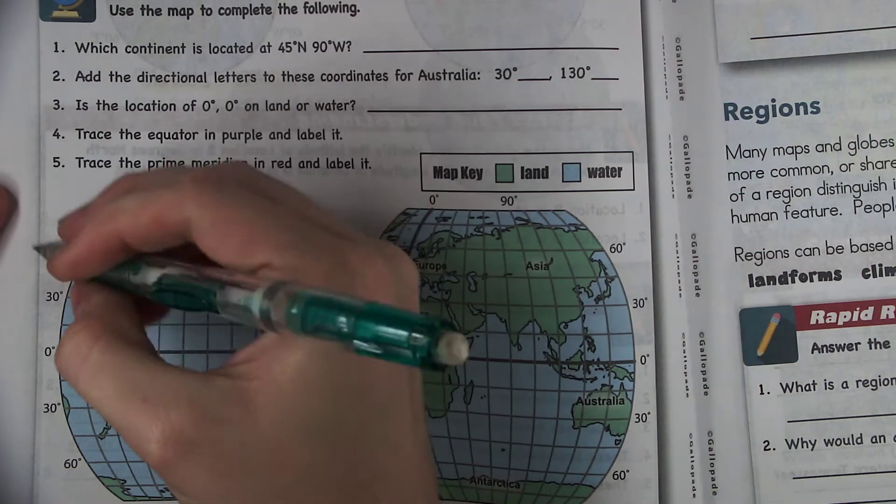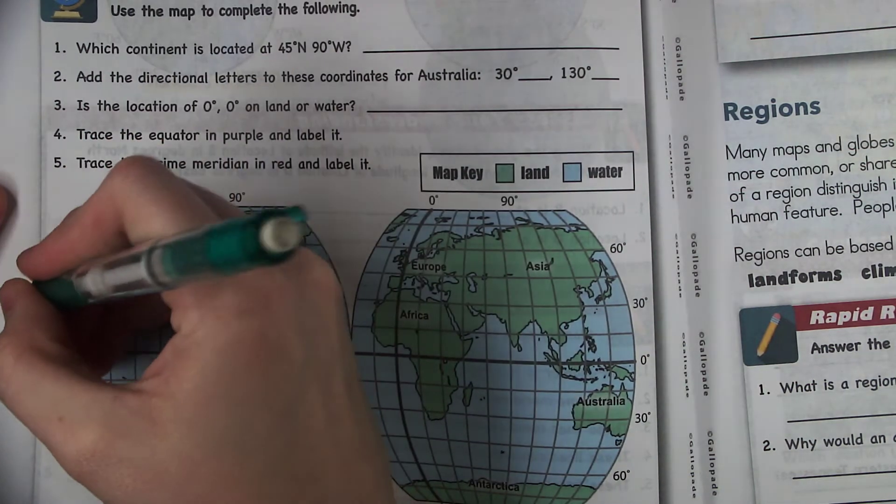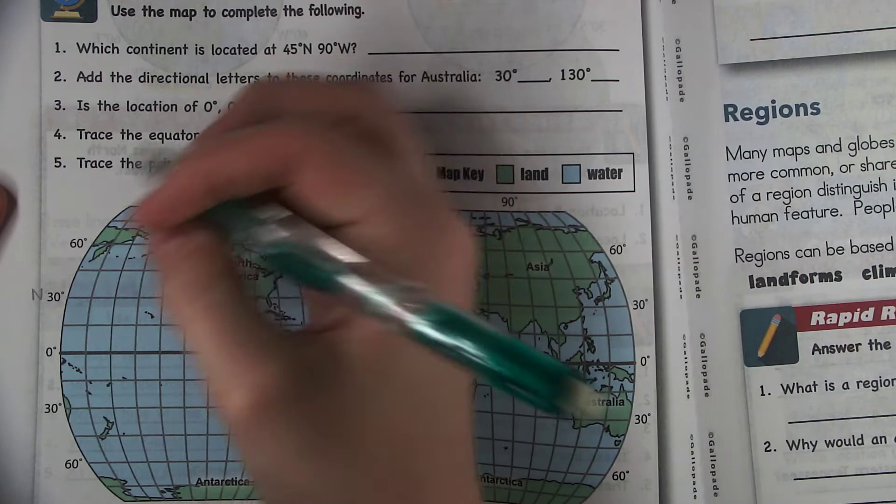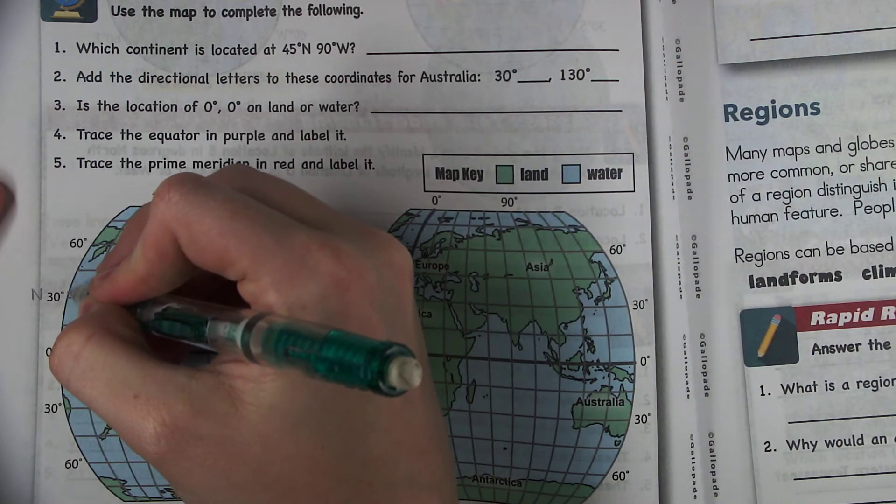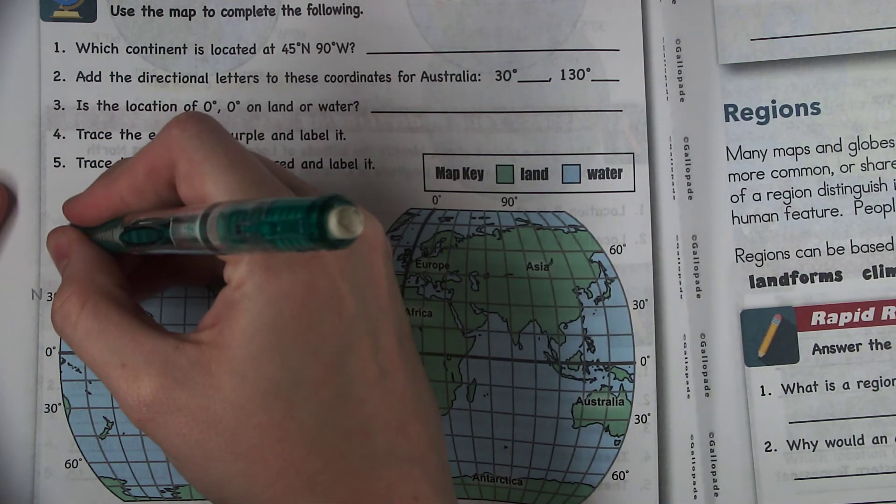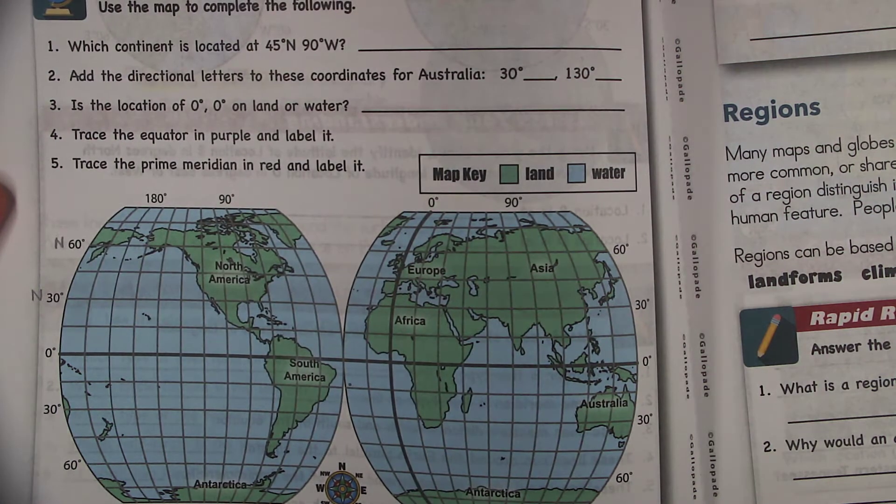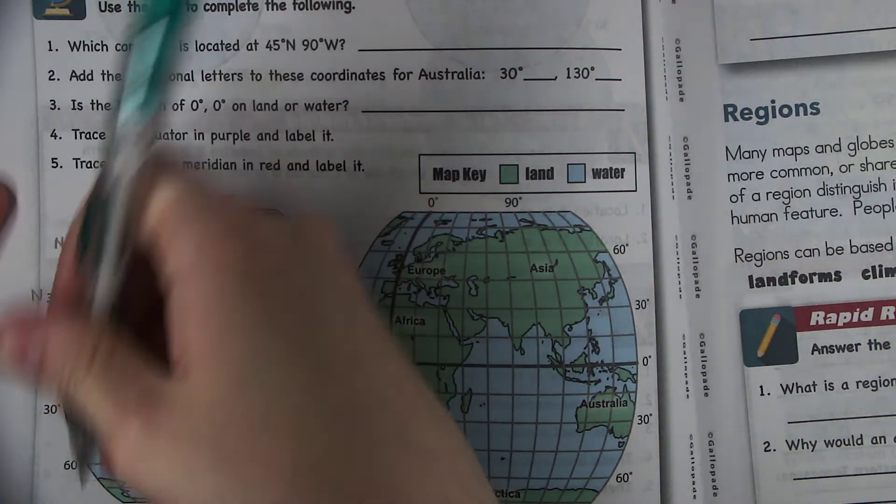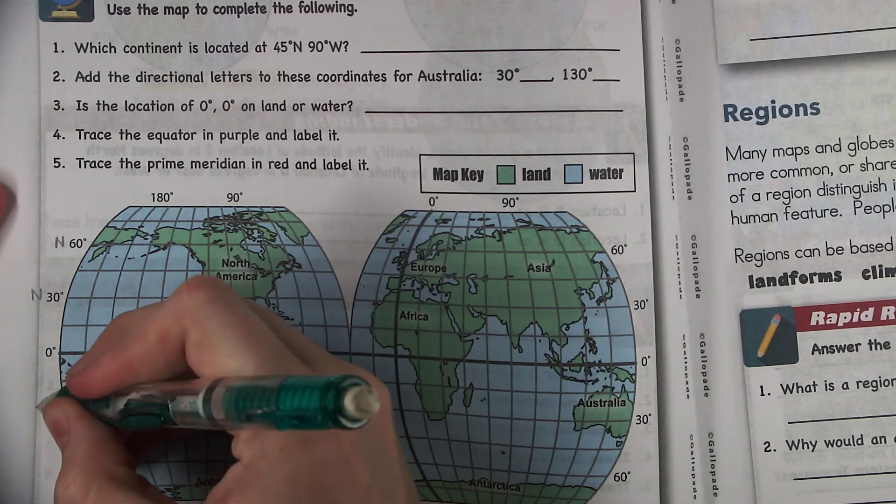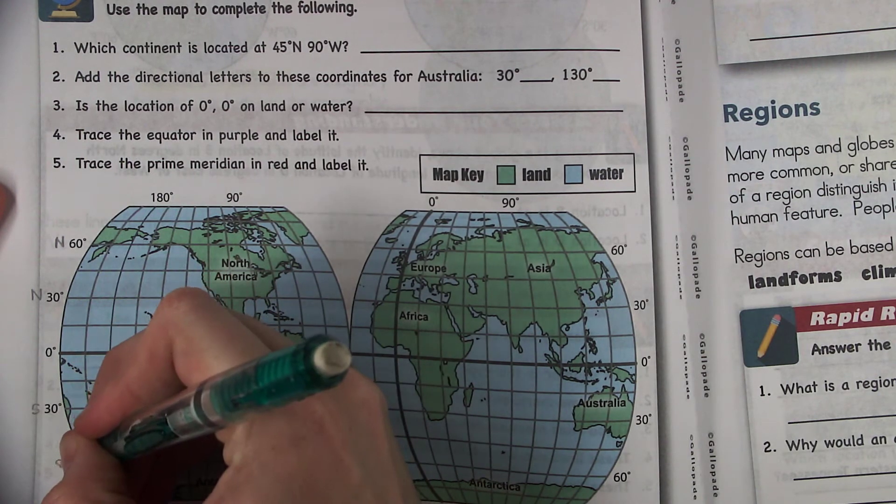When you go up from zero degrees, it's going to be 30 degrees. So that would be 30 degrees north. I would write the N right there where it belongs but you won't be able to see it. So this would be 60 degrees north. If you go below the equator, it would be 30 degrees south and 60 degrees south.